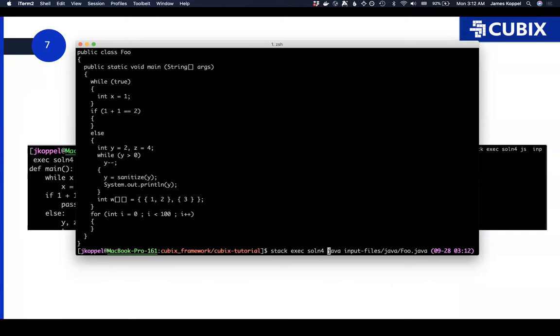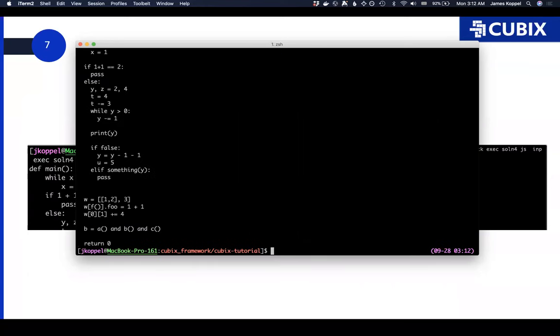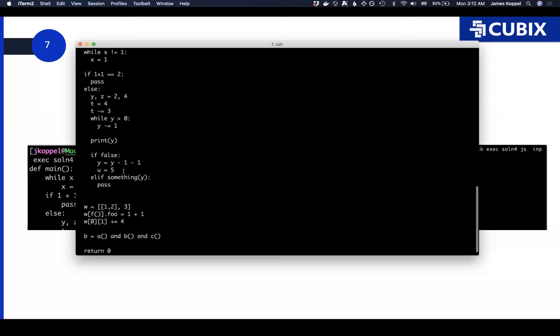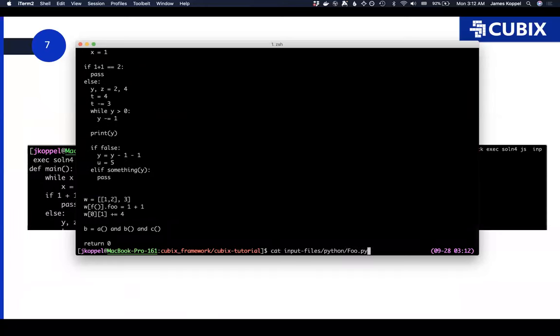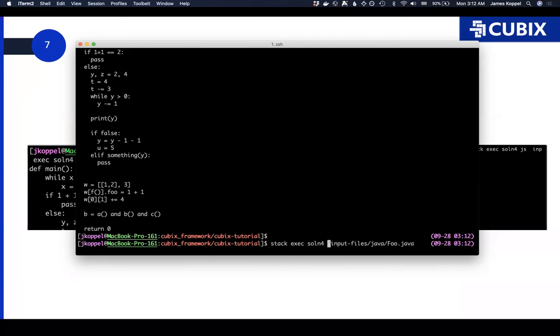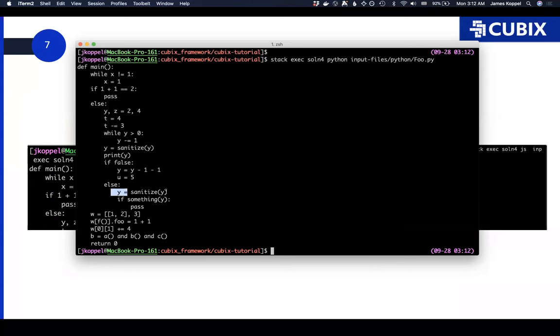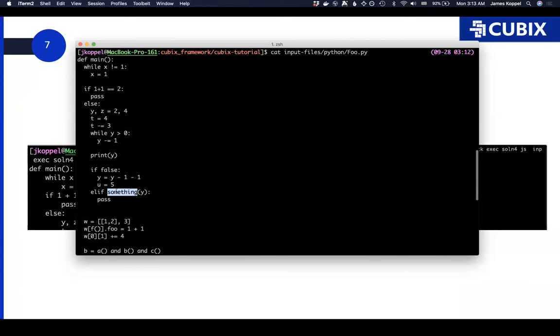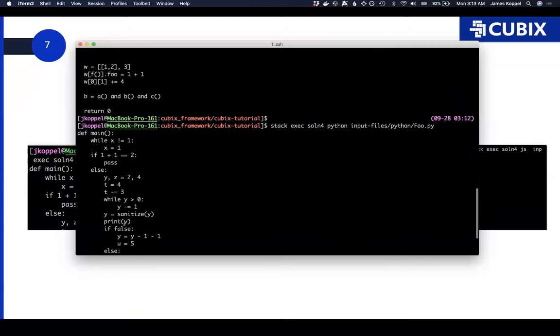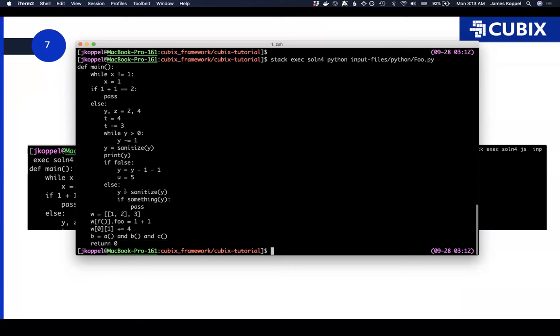Now let's try it for Python. And there it sanitized it for Python as well. And I'll note that it actually did something language specific here, where in order to get at this function call inside an if condition actually had to split that into a nested if-else, which it was able to do without any language specific code.